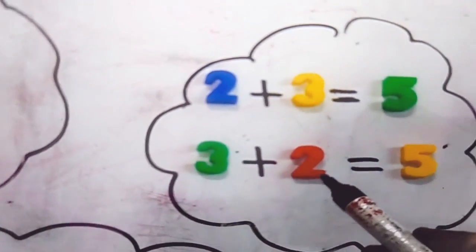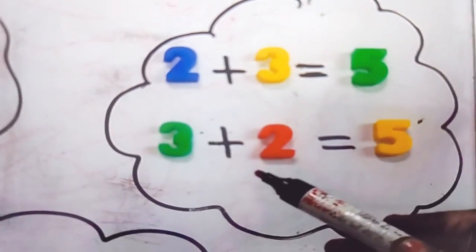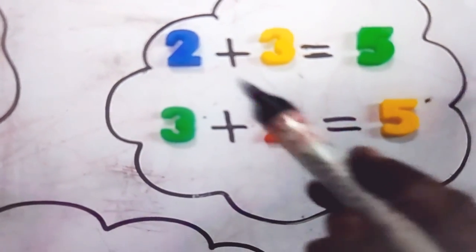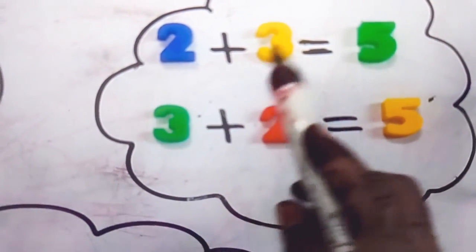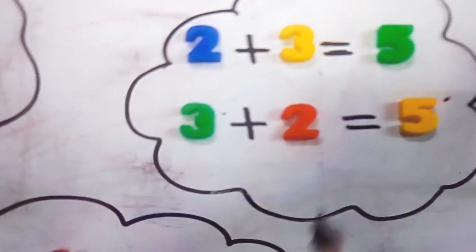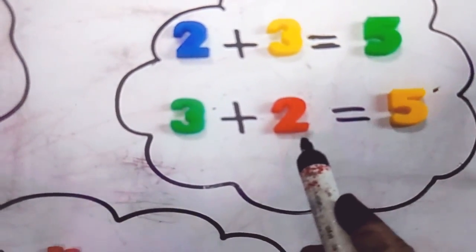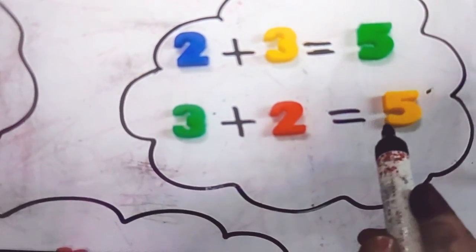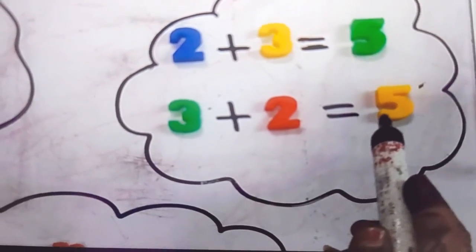Second, the order of the addends doesn't matter. Addends means the two numbers which we are adding. So, whether we write 2 plus 3, it will give us 5, or whether we change the order of addends—that is 3 plus 2—then also, the sum will never change. It will give us 5.